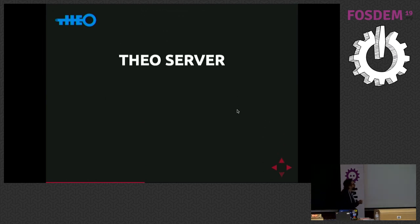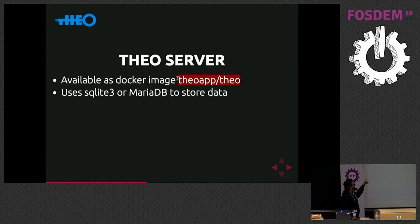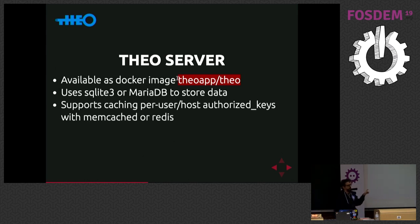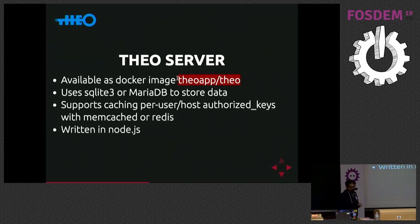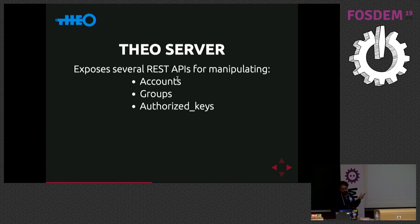Theo server is already available as a Docker image — it's in Docker Hub as theoapp/theo. You can use SQLite3, MariaDB, or MySQL to store data. It supports caching per user-host authorized keys, so if the cache for a user-host pair is already in cache, it doesn't have to query the database. You can use memcached as you prefer. It's written in Node.js. Theo server exposes several REST APIs for manipulating accounts, groups, authorized keys, and permissions, and it's consumed by Theo CLI.